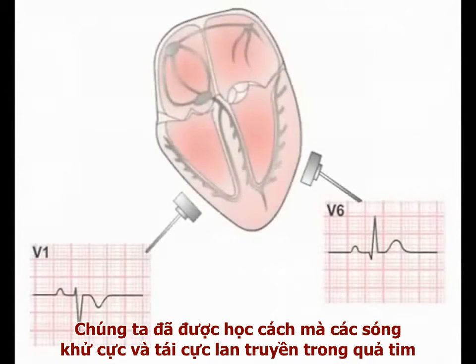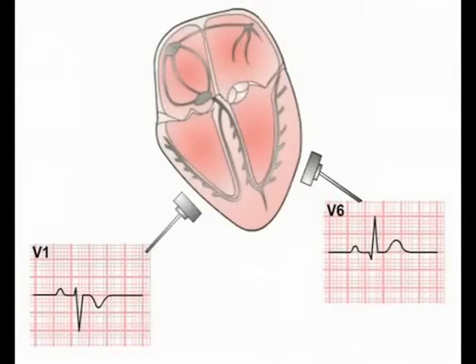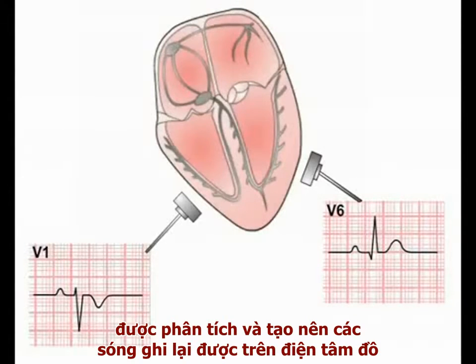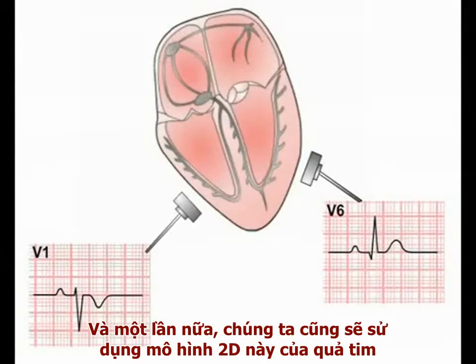We've seen how the cardiac depolarisation and repolarisation waves spread through the heart. Now we will go on to explain how these electrical events are analysed by the ECG leads to produce the waveforms of the ECG readout.